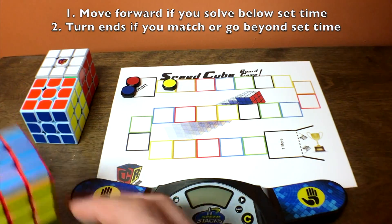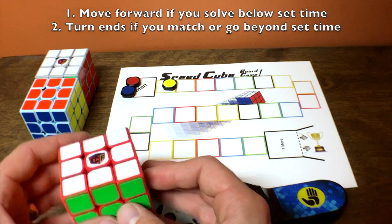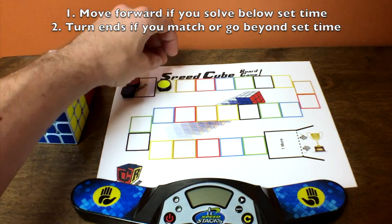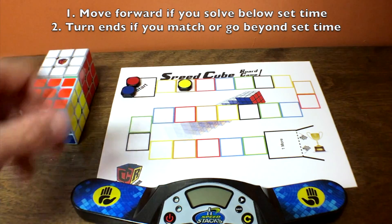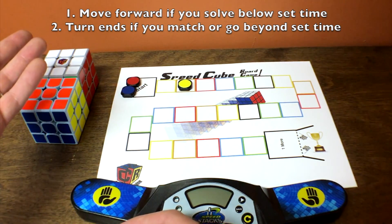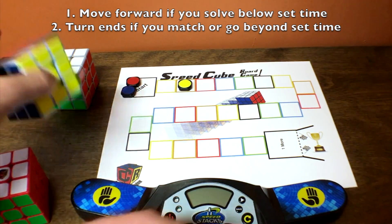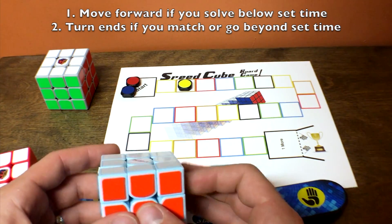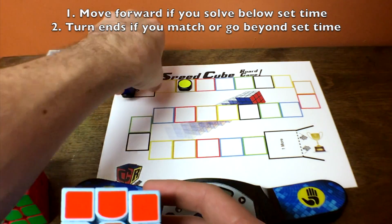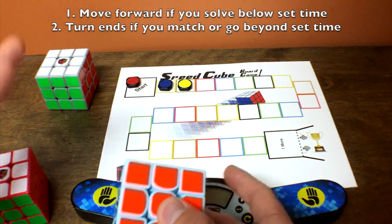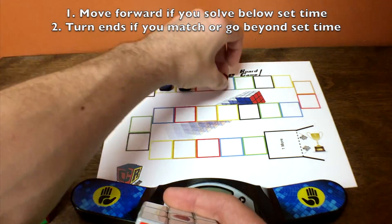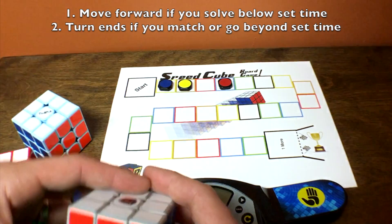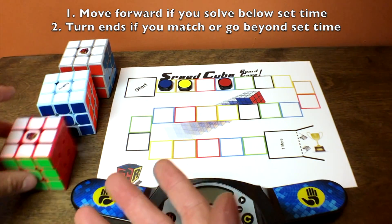So let's say I'm solving with this one. This is a Mei Ying. And I solve below my average of a hundred, below again, and then I get above it. So that's that. Next person goes. And I do one solve, and then, oh, I got above that time, then I do the next one, and it keeps going from there until you get to the finish line. And that's pretty much it.